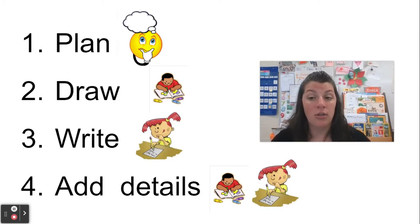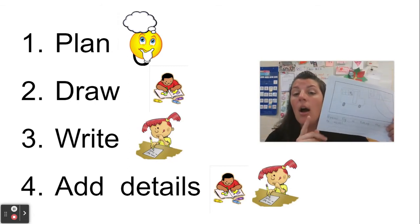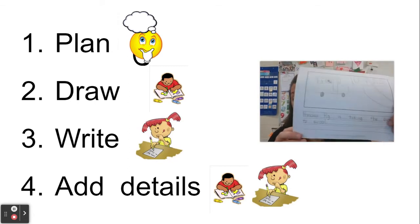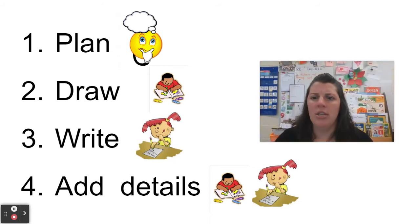Another thing you could add to your words is another sentence about how your character's feeling. In the beginning, I said Princess Pig is taking the bus to school. Was she excited? Was she happy? Was she nervous? How is she feeling? That's a detail I might want to add.